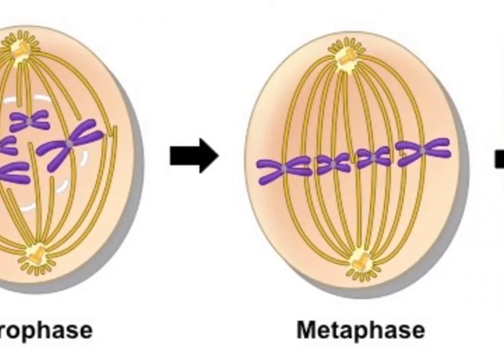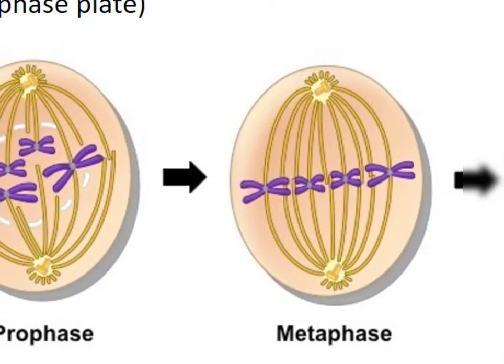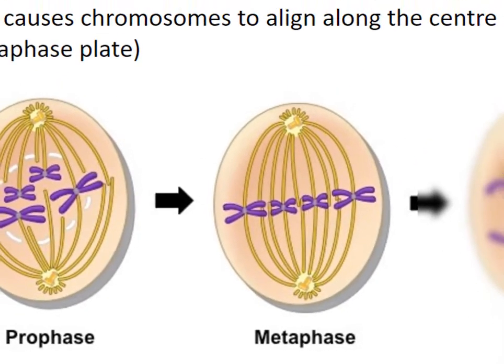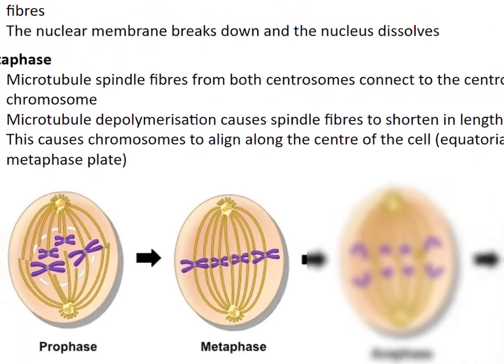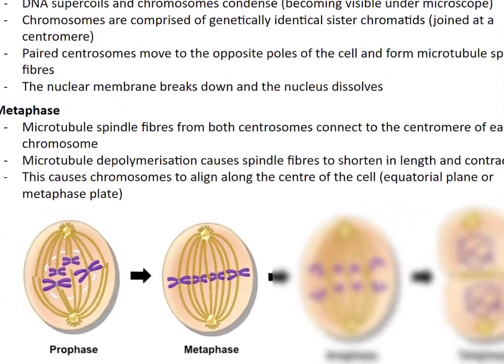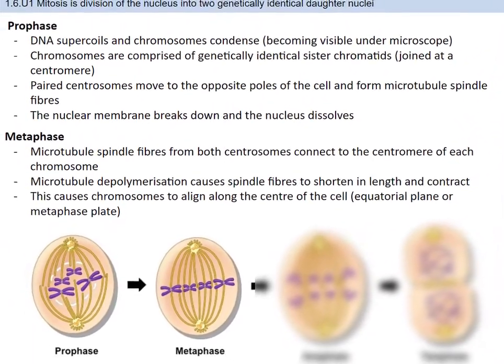In metaphase, there is more organization. The microtubule spindle fibers from both centromeres connect to the centromere of each chromosome, and the spindle fibers shorten in length and contract. This causes chromosomes to align along the center of the cell, which is called the equatorial plane, or the metaphase plate.